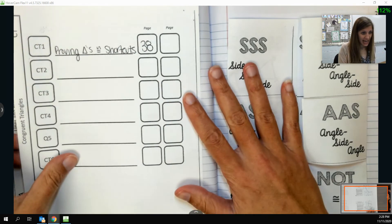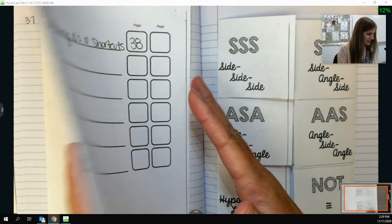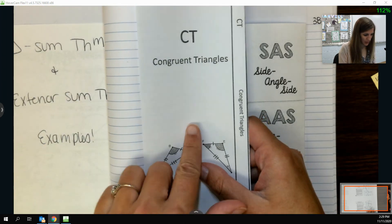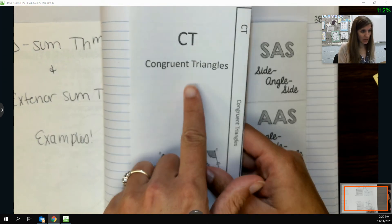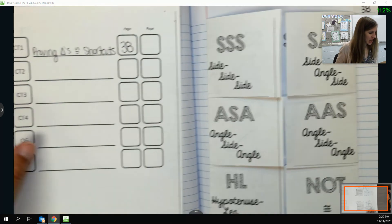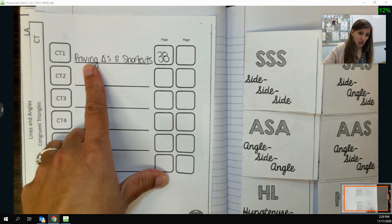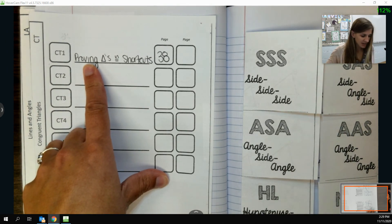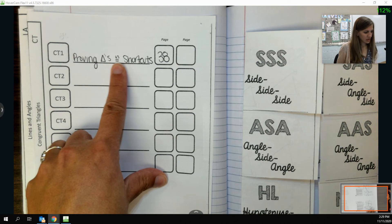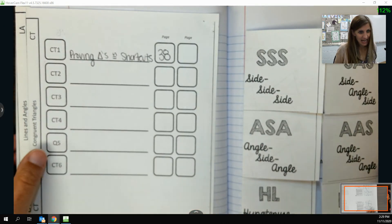Alrighty guys, so we're going to add to and fill out our first set of notes in our new chapter. We hopefully put all of these in already in our notebook for Chapter 4, Congruent Triangles chapter. The first thing that we're going to add in our table of contents is the shortcuts that we found in our Desmos activity. So Proving Triangles Congruent Shortcuts is going to be on page 38.